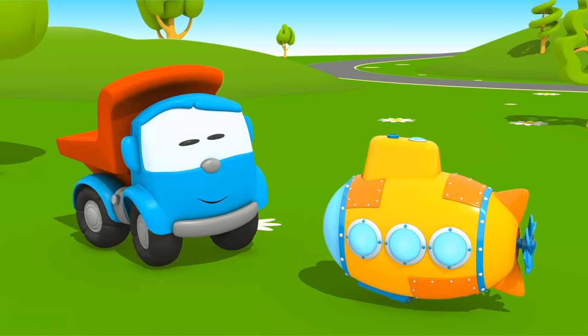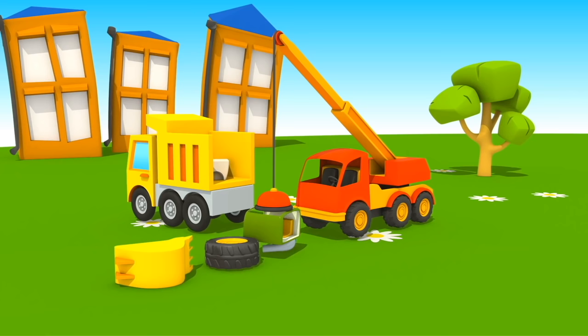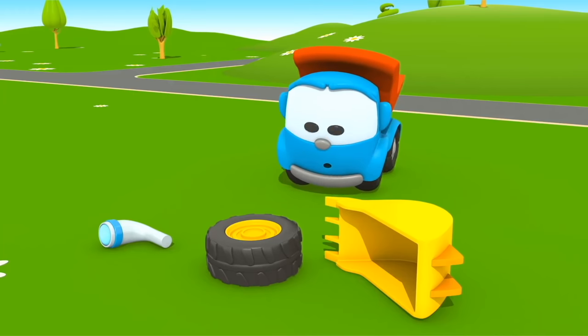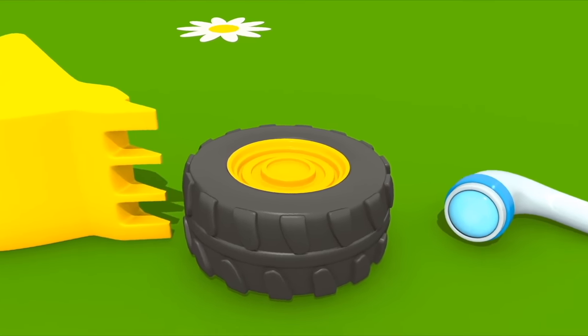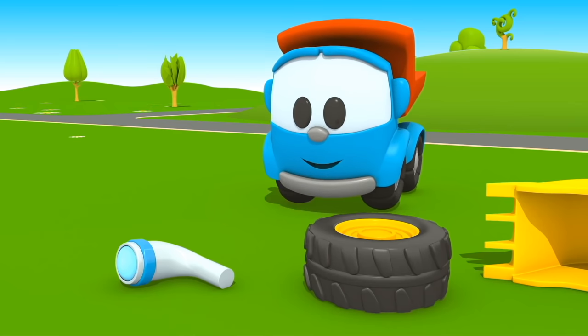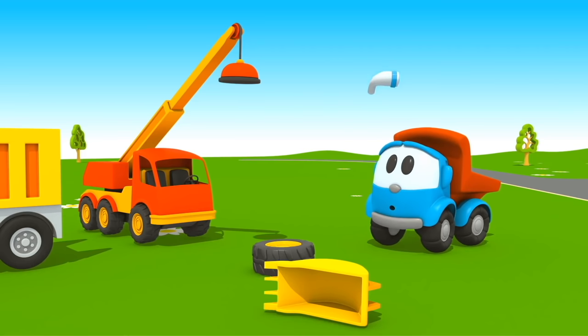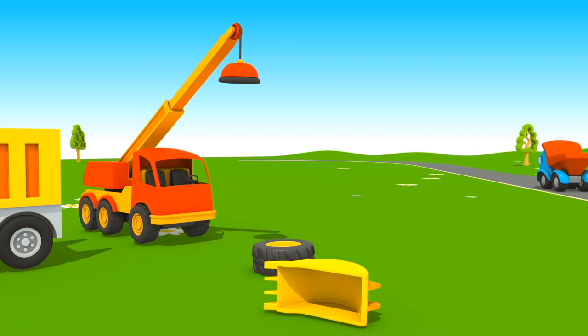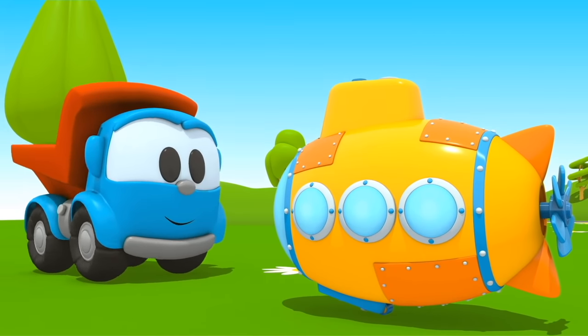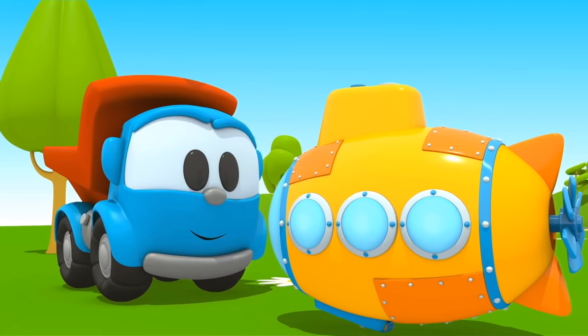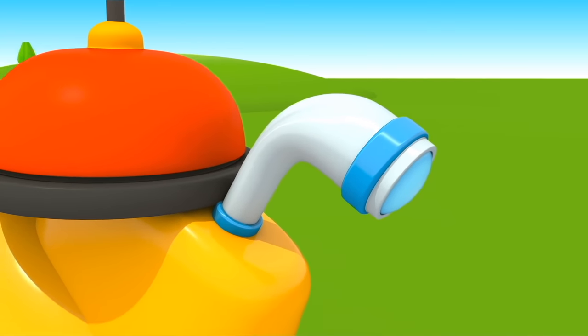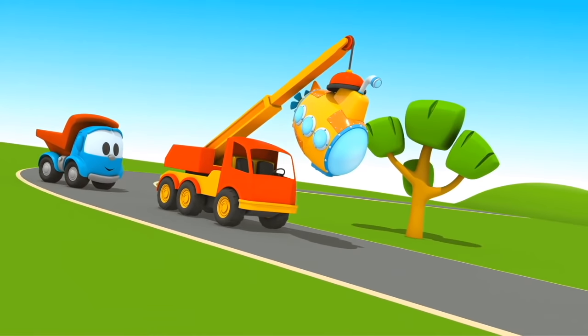Now we need to find a periscope. A periscope is a special telescope on a submarine. With it, we can see what's happening under the water. Leo, look closely. Where is the periscope? Shovel, wheel. Right, here it is. Now the submarine is ready. The big crane will help us to put it into the water.